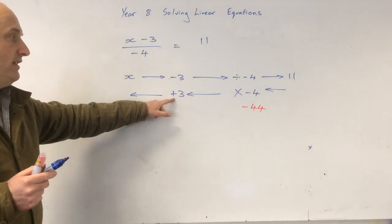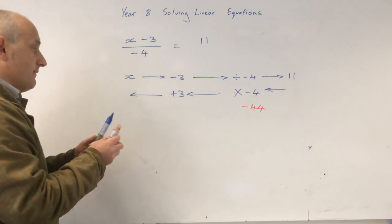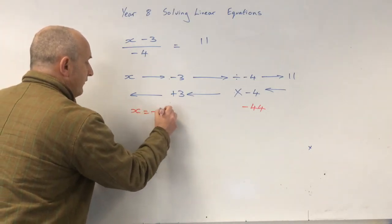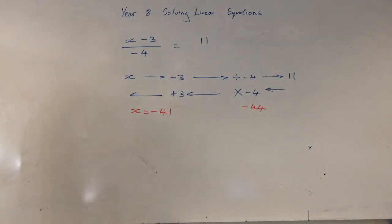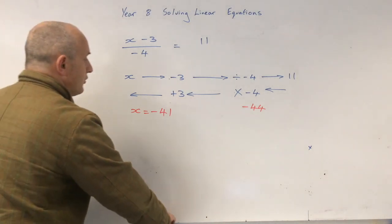Be careful with this. Negative 44 plus 3. x equals negative 41. Just be really careful with those directed numbers. Be really careful because it's easy to trip up on these things. Let's just do one more.